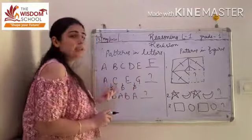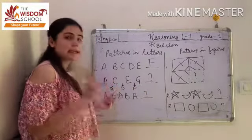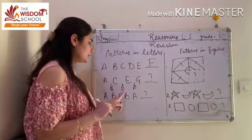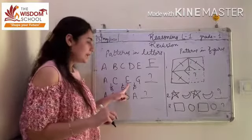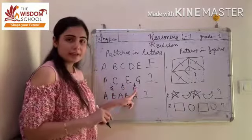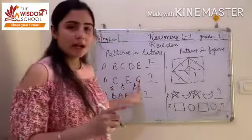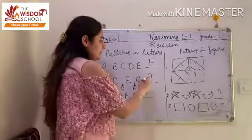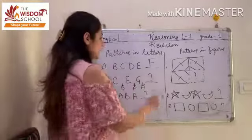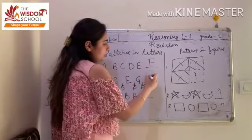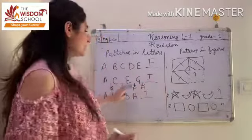So: after E we write G — we skip the next letter F and write G. After G, we do the same thing: we skip H and write I. This is the skipping form of the letter pattern.